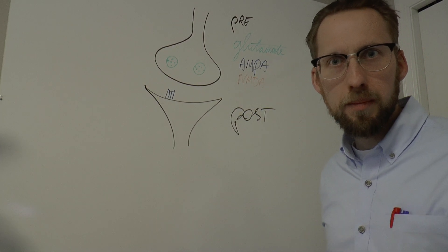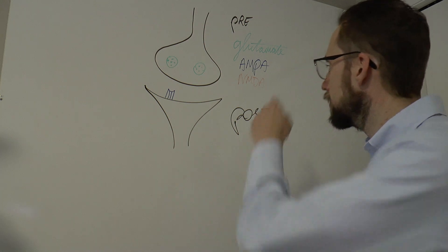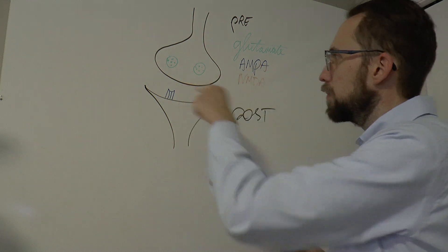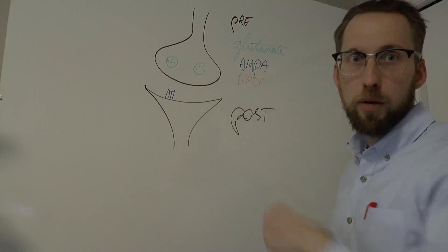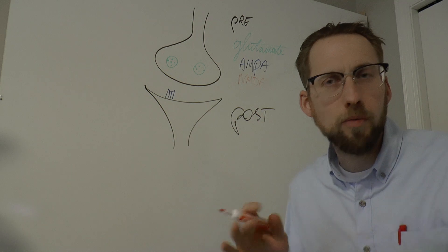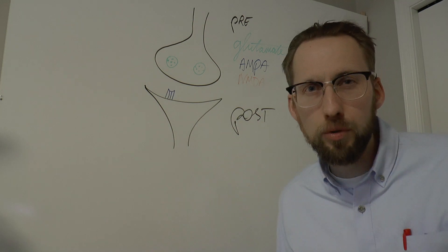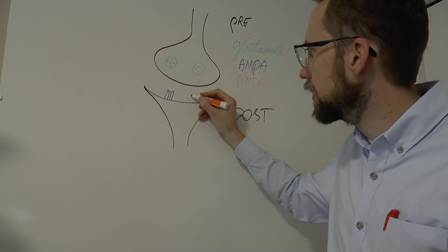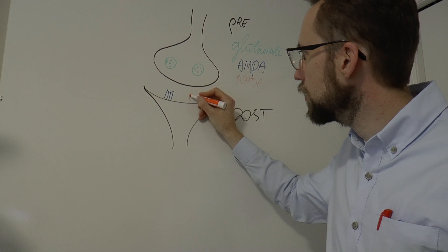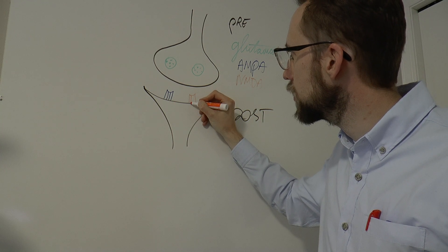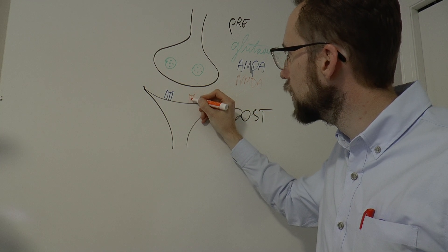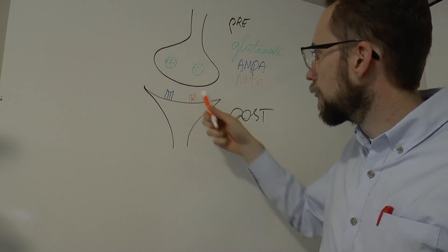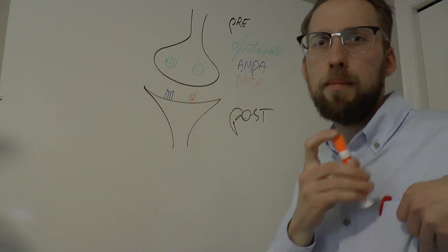and one of those other receptors happens to be called NMDA. Is that the same as MDMA? No. MDMA is ecstasy. That's a recreational drug. This is a different type of chemical. NMDA binds to the NMDA receptor. AMPA binds to the AMPA receptor, but AMPA does not bind to the NMDA receptor. These are just chemicals. Remember that you inject someone with it. It's not a neurotransmitter. It just binds to that specific type of receptor. So here we have an NMDA receptor. And an NMDA receptor is a little special.